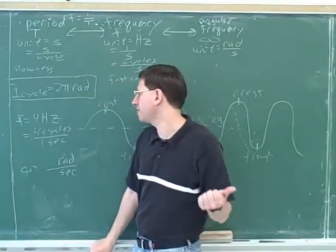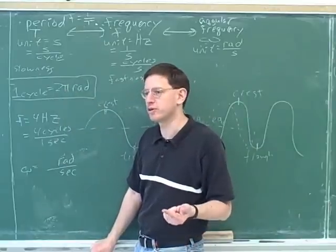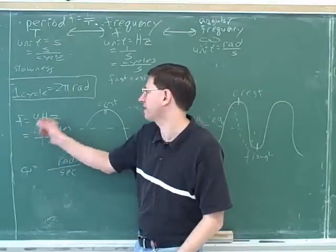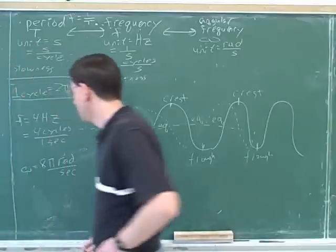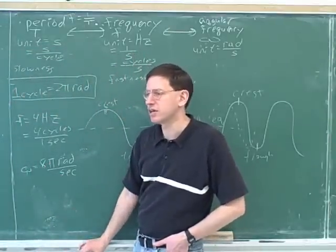So, the first cycle takes them to two pi radians, then the second cycle takes them to four pi radians, then six pi radians, and then the fourth cycle takes them to eight pi radians. So, their angular frequency would be eight pi radians. Good.